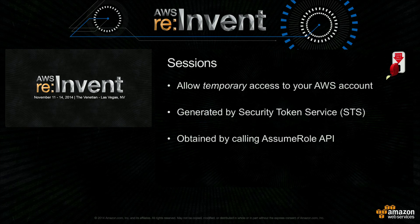The sessions allow you to grant temporary access to your AWS account — temporary being the keyword. It's not long-term access. These sessions are generated by a service that we call STS or Security Token Service. You can obtain these by calling the AssumeRole API, and the AssumeRole API is the basis on which cross-account access works in IAM.